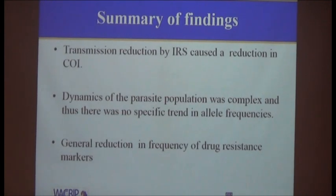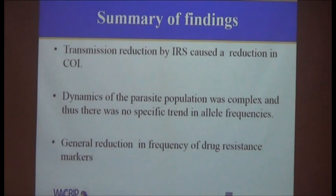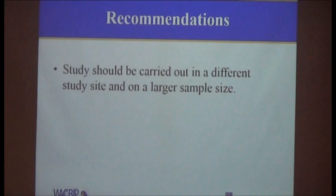In summary, transmission reduction by IRS caused a reduction in complexity of infection. The dynamics of the parasite population were complex, and there was no specific trend in allele frequencies. There was a general reduction in the frequency of drug resistance markers. I would recommend that a study be done at a different site with a larger population to confirm whether, as transmission reduces, there is truly a reduction in the frequency of drug resistance markers and COI.